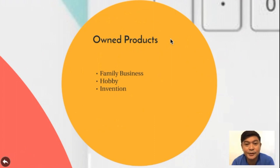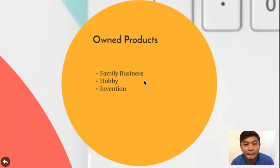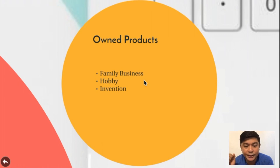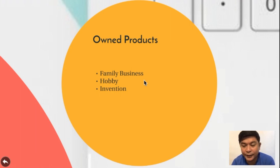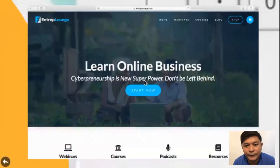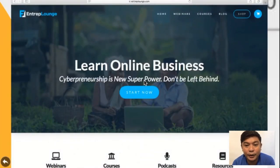Sources of products for the own product model can be your family business, a relative's existing business, a hobby — like handicrafts, jewelry, or accessories — or even an invention. Here's an example: I own a website in partnership with UP Open University where I host webinars and create online classrooms for my entrepreneurship classes. I sell ebooks there — digital products like electronic books that I write, format as PDF, and post on the website.